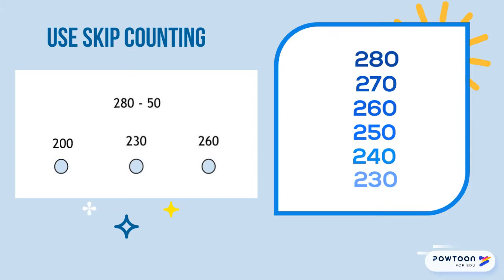We figured out the answer. 280 minus 50 is 230. And I see that right here, right in the middle. We figured it out with our skip counting.